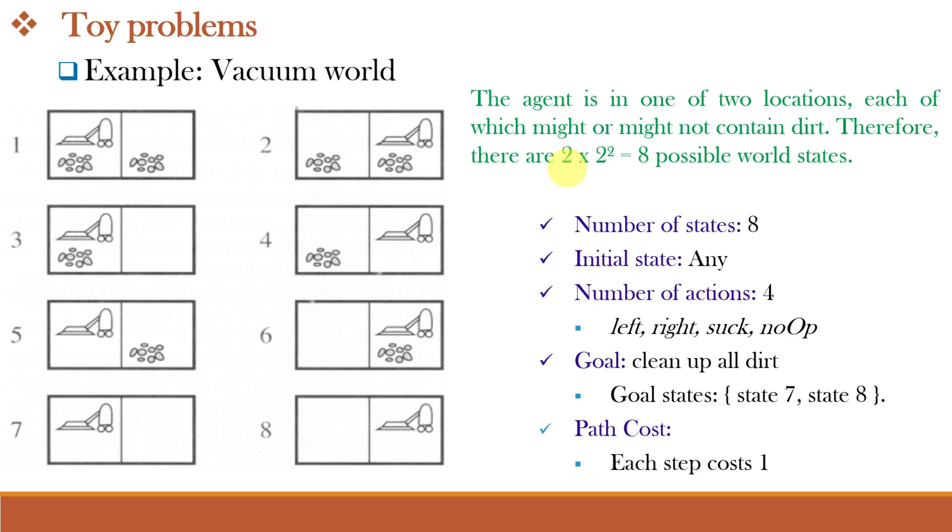Therefore, there are 2 into 2 raised to 2 which is equal to 8 possible world states. 2 means location A and B into 2 raised to 2 means A and B either clean or dirty. Either both clean, both dirty or one clean, other dirty and other clean and one dirty. A larger environment would have N into 2 to the power of N states.